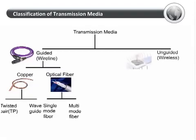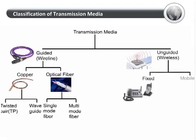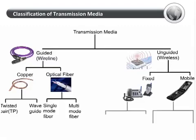Wireless media can be fixed or mobile, depending on whether the subscriber can change serving stations during a session or call without loss of connectivity. Both fixed and mobile networks can consist of terrestrial media or satellites. We have already seen examples of wireless networks of various kinds.